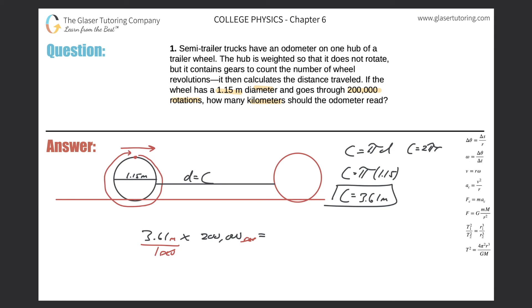We take 3.61 multiply it by 200,000, we get a value of 7.22 times 10 to the 5 meters. Now that's not the answer because they want it in kilometers, but that's easy. Just move the decimal three places to the left, or subtract 3 from the exponent, or divide this value by 1,000. So the answer is 7.22 times 10 to the second kilometers.